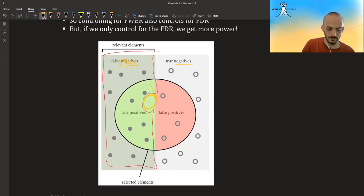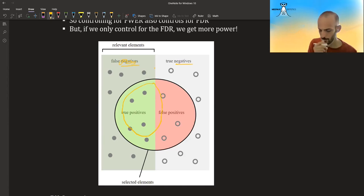So instead of that, what the FDR does, or if you're trying to control for FDR, what it will do, maybe it will reduce a bit, but it will try to keep more of the circle. So it might reduce a bit, but it will also try to keep more of the circle. It will have more power in general than the FWER.